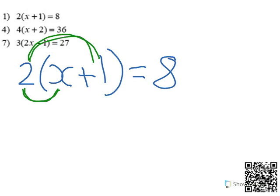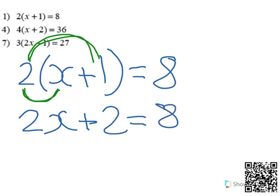So when we do that, we get 2x plus 2 equals 8. And then we solve the equation in the normal way.